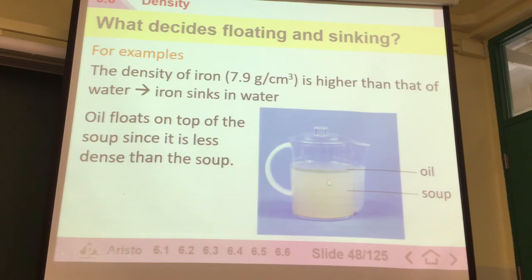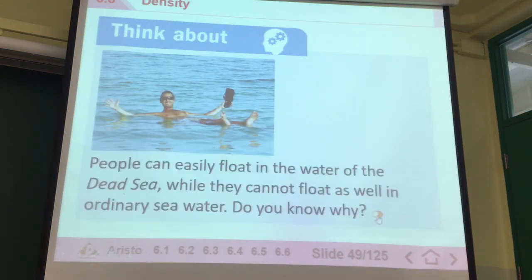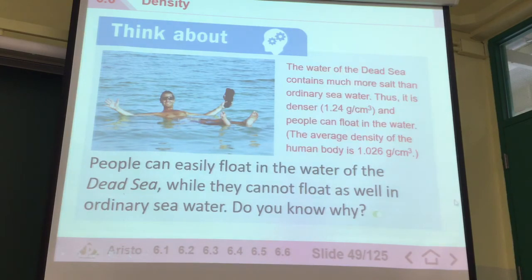Also in the Dead Sea, you will be able to float. In the Dead Sea, it contains a lot more salt. That's why it's 1.24 compared to our normal seawater which is 1.03. So this one's number is higher. Our body is around 1.026. We compare this number to 1.24. This number is lower, so that's why we float on top of the Dead Sea. That's the reason. We compare this to this number.